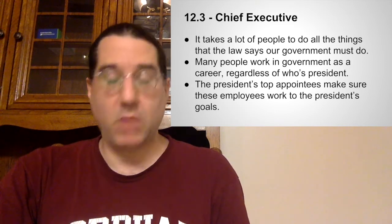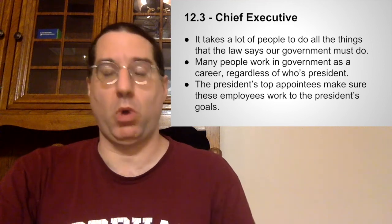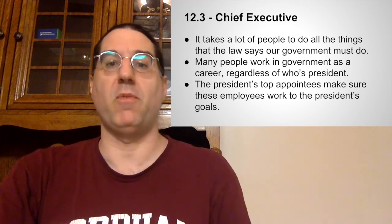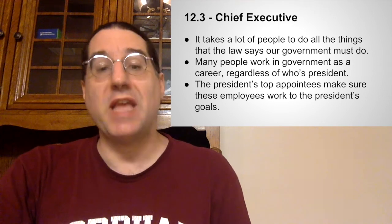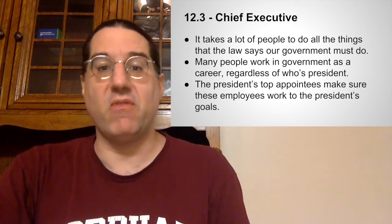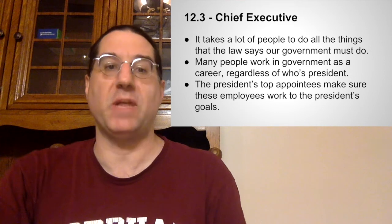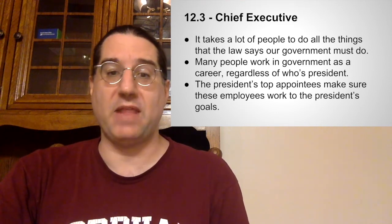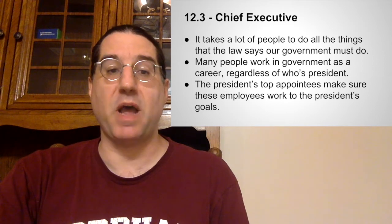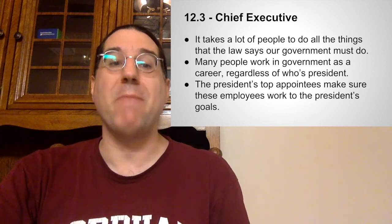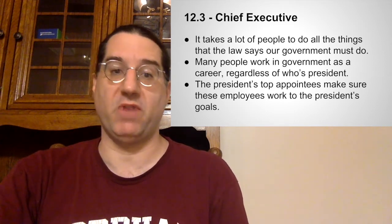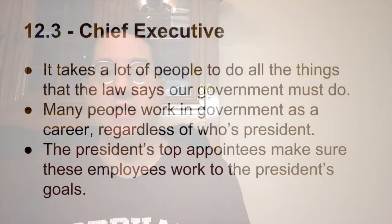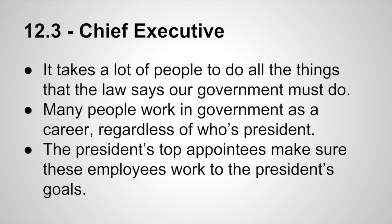But even if the same people are working for these different presidents, those different presidents want the government to do different things. So they use their power as chief executive to point the executive branch in the direction that they want to go. One major way that the president does that is by having the power to appoint many of the top officials in a lot of government departments, and it's then the role of those appointees to translate the president's agenda into reality.